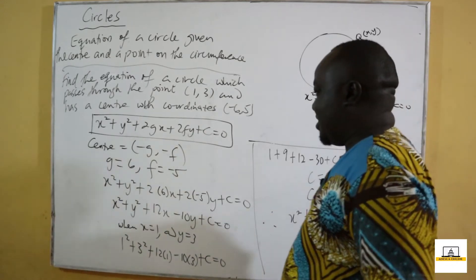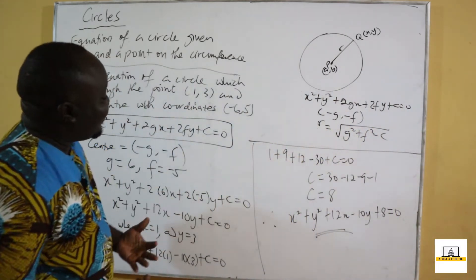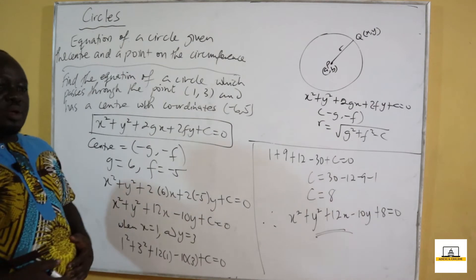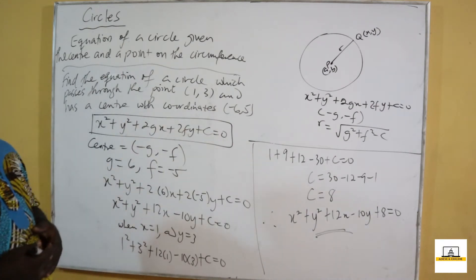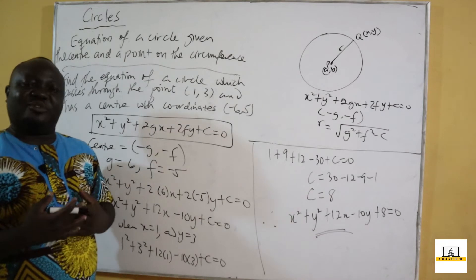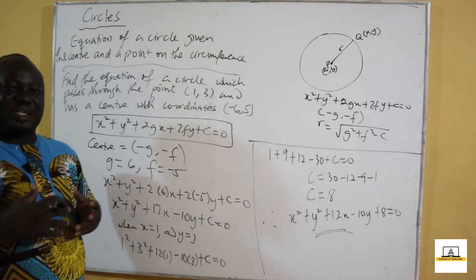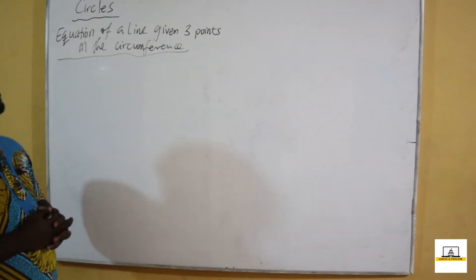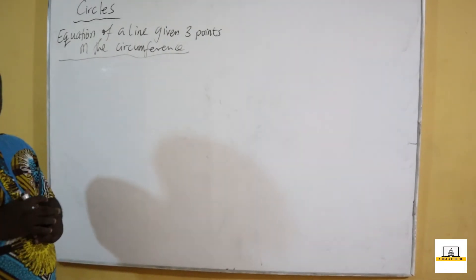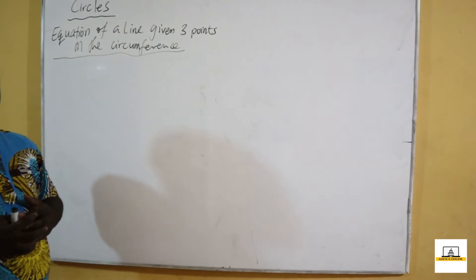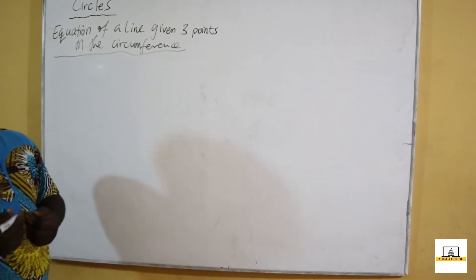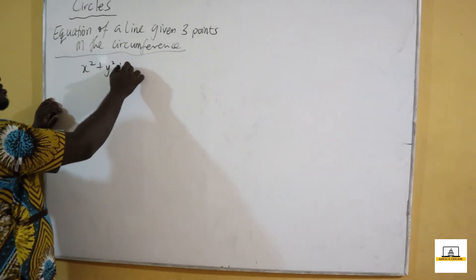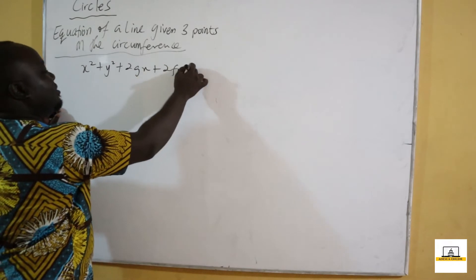This is the equation of the circle. This is how we find the equation of a circle when given a center and a point on the circumference. Now we are also going to learn how to find the equation of a circle when given three points on the circumference. We always use the general equation X squared plus Y squared plus 2GX plus 2FY plus C equals zero.